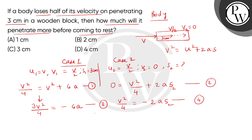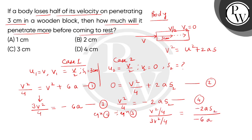Now let's divide equation 4 by equation 3. We get (V²/4) / (V²/4) = (−2As₂) / (−6A). The V²/4 terms cancel on the left giving 1, the minus signs cancel, and A cancels, leaving 1 = 2s₂/6, so s₂ = 6/2 × (1/3) wait — simplifying: s₂ = 1 cm. So the correct answer is option A. Thank you.